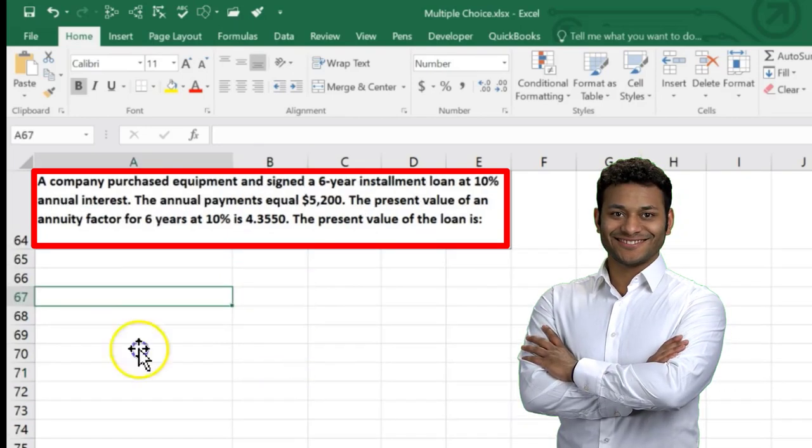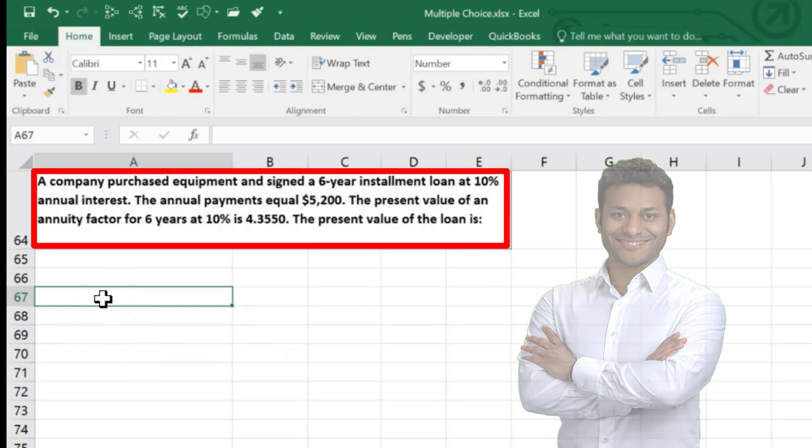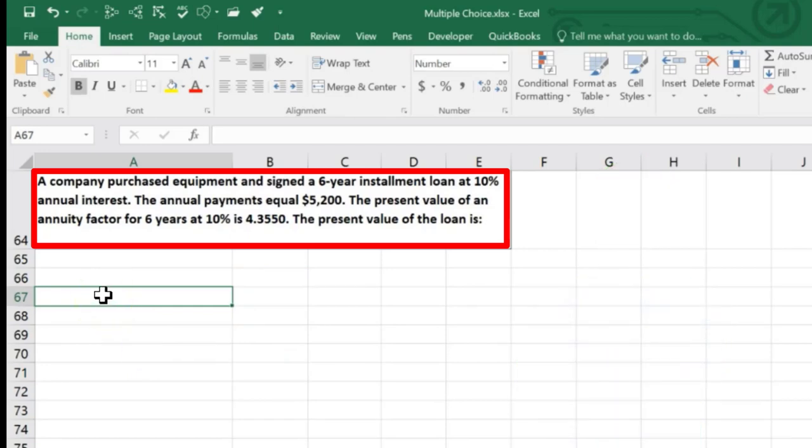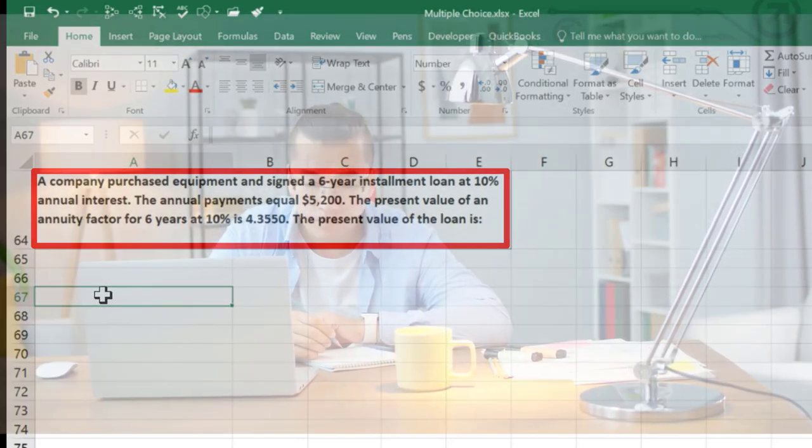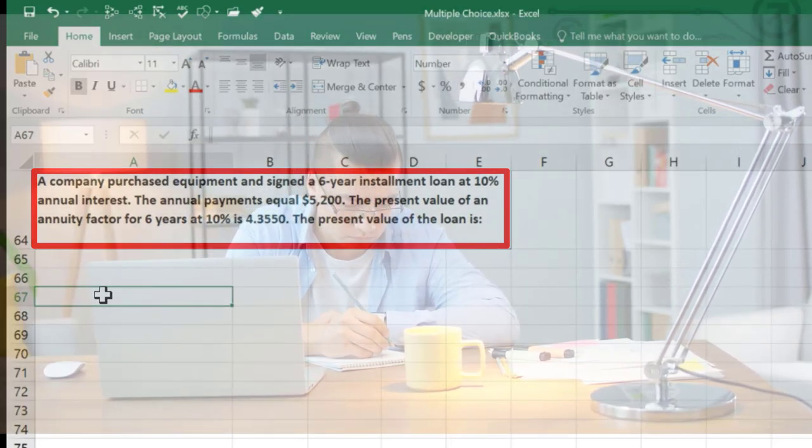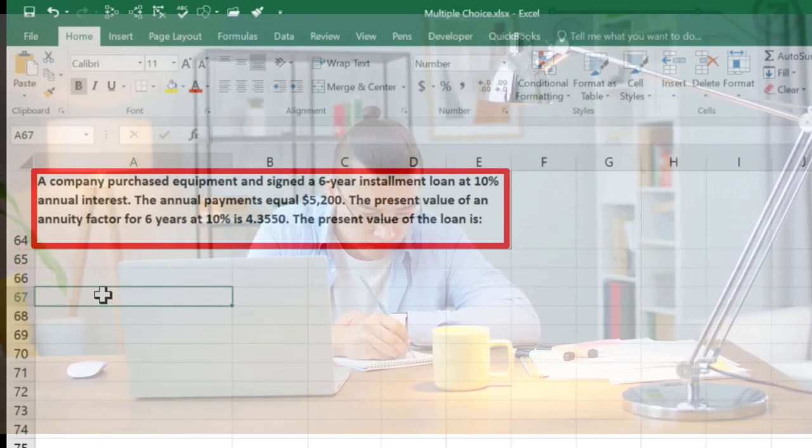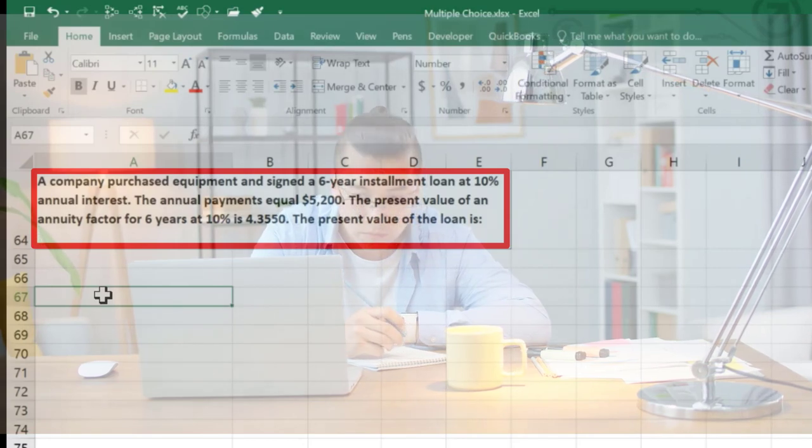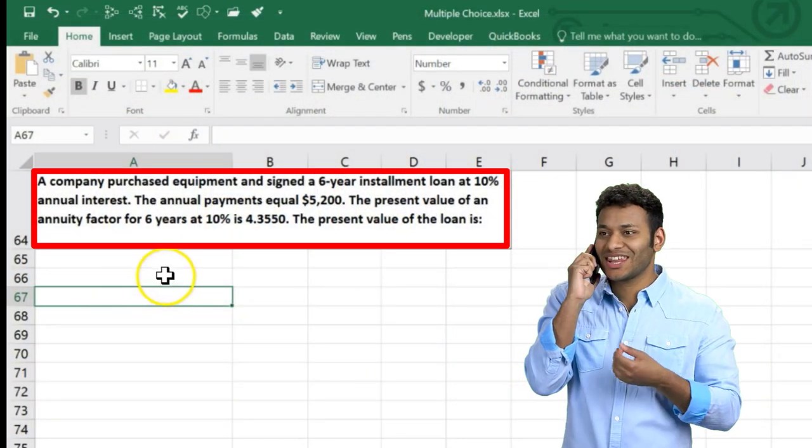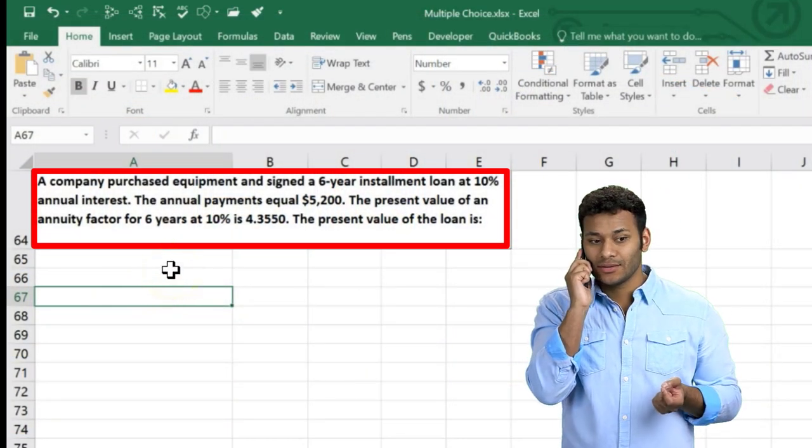Next one says a company purchased equipment and signed a six-year installment loan at 10% annual interest. The annual payments equal $5,200. The present value of an annuity factor for six years at 10% is 4.3550. The present value of the loan is what?